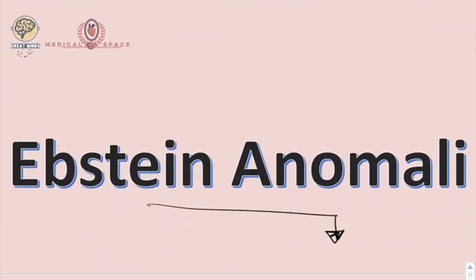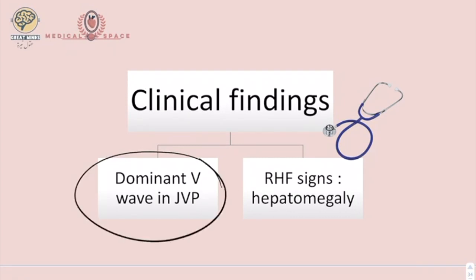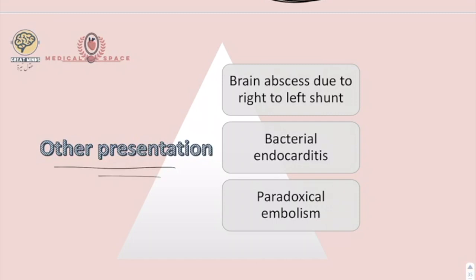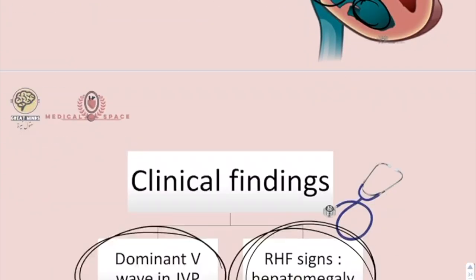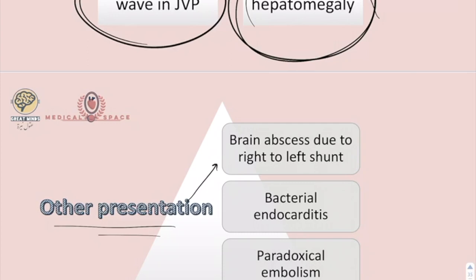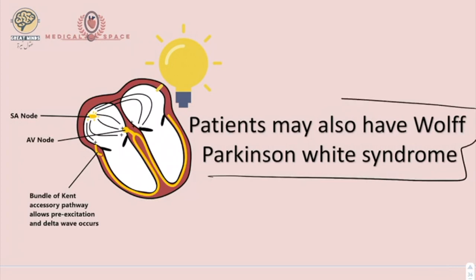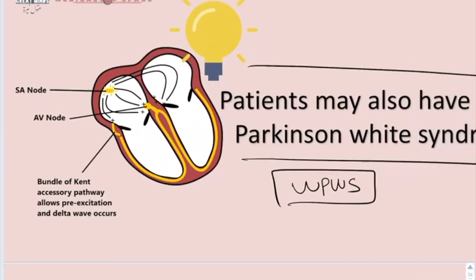The last anomaly is Ebstein Anomaly. In Ebstein Anomaly, the tricuspid valve is abnormally displaced toward the apex, with atrialization of the right ventricle. Clinical findings include a dominant V wave in the JVP and signs of heart failure like hepatomegaly. The displaced tricuspid valve makes the right atrium huge and the right ventricle very small. The patient may present with brain abscess due to right-to-left shunting, bacterial endocarditis, or paradoxical embolism. Many patients with Ebstein Anomaly have Wolff-Parkinson-White syndrome with an accessory pathway — the bundle of Kent — which may be visible on ECG.